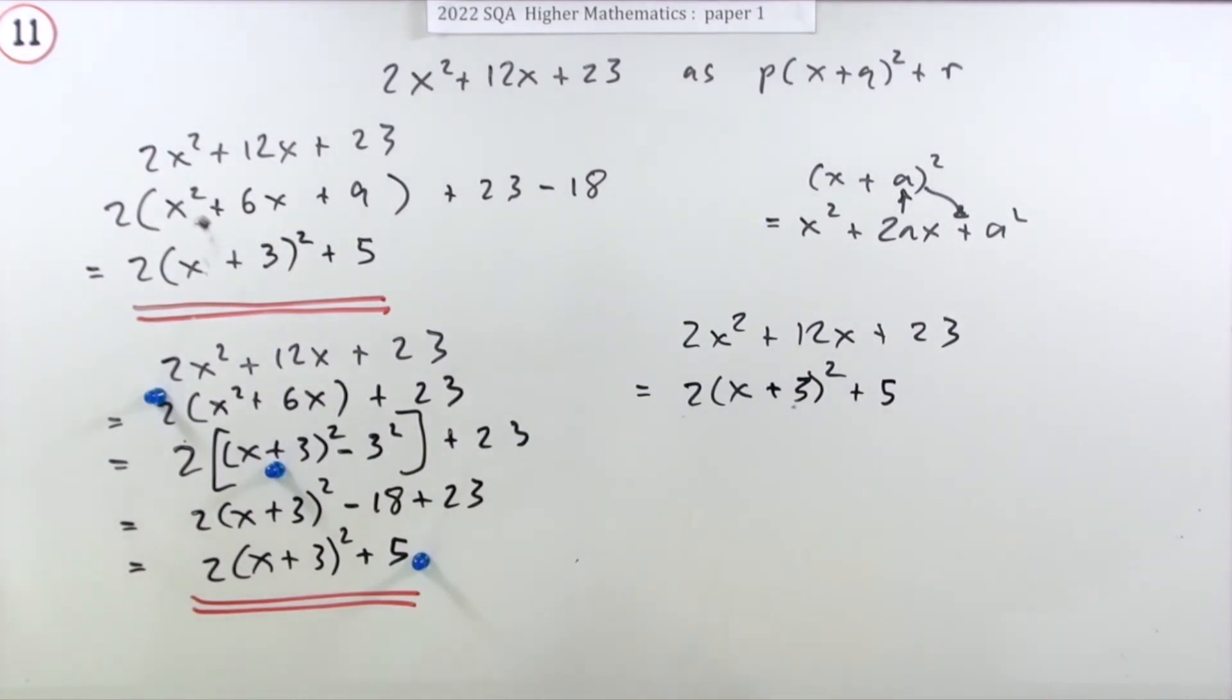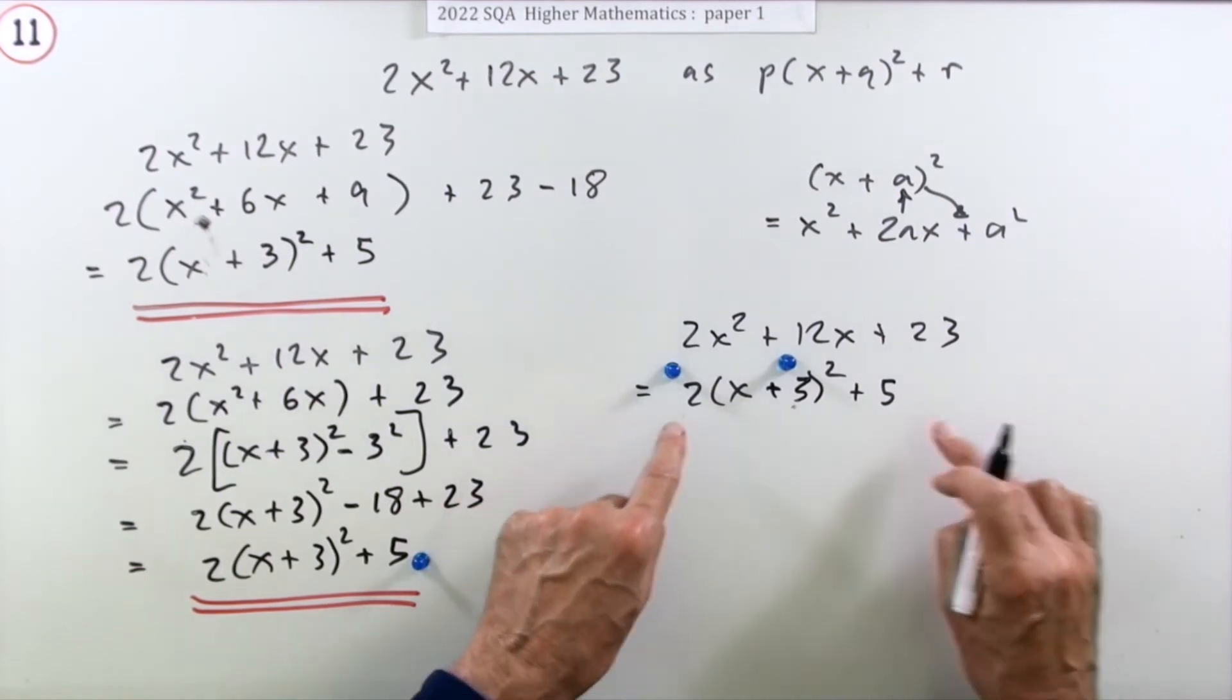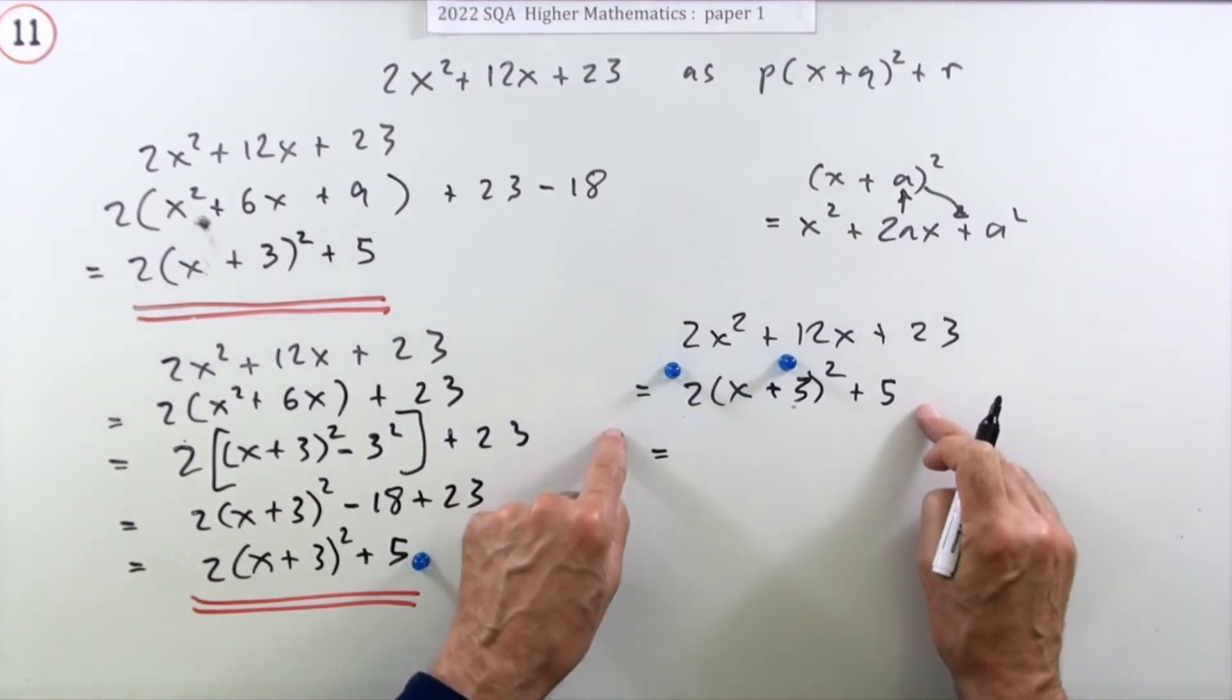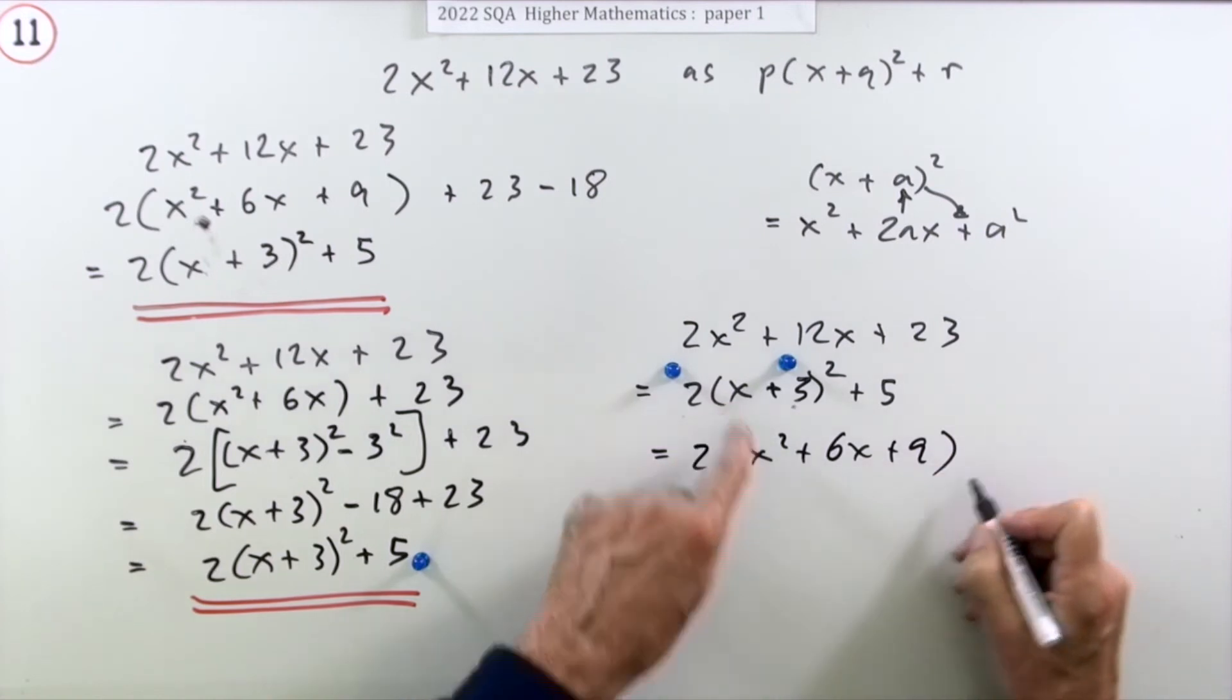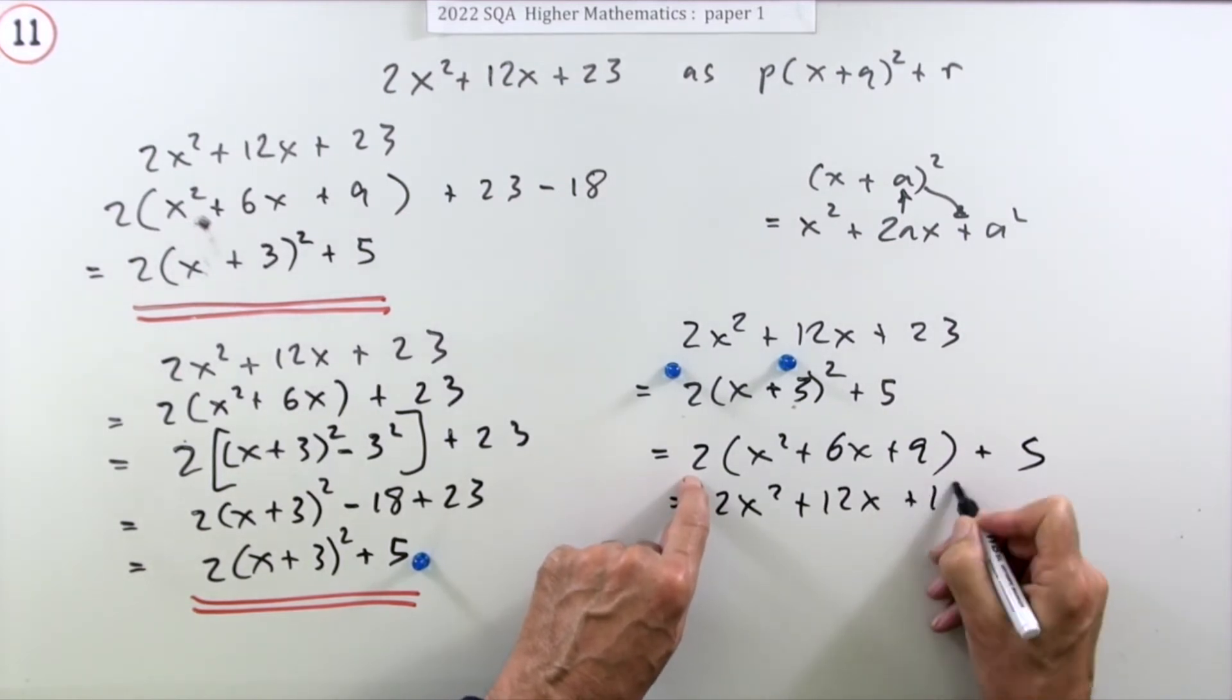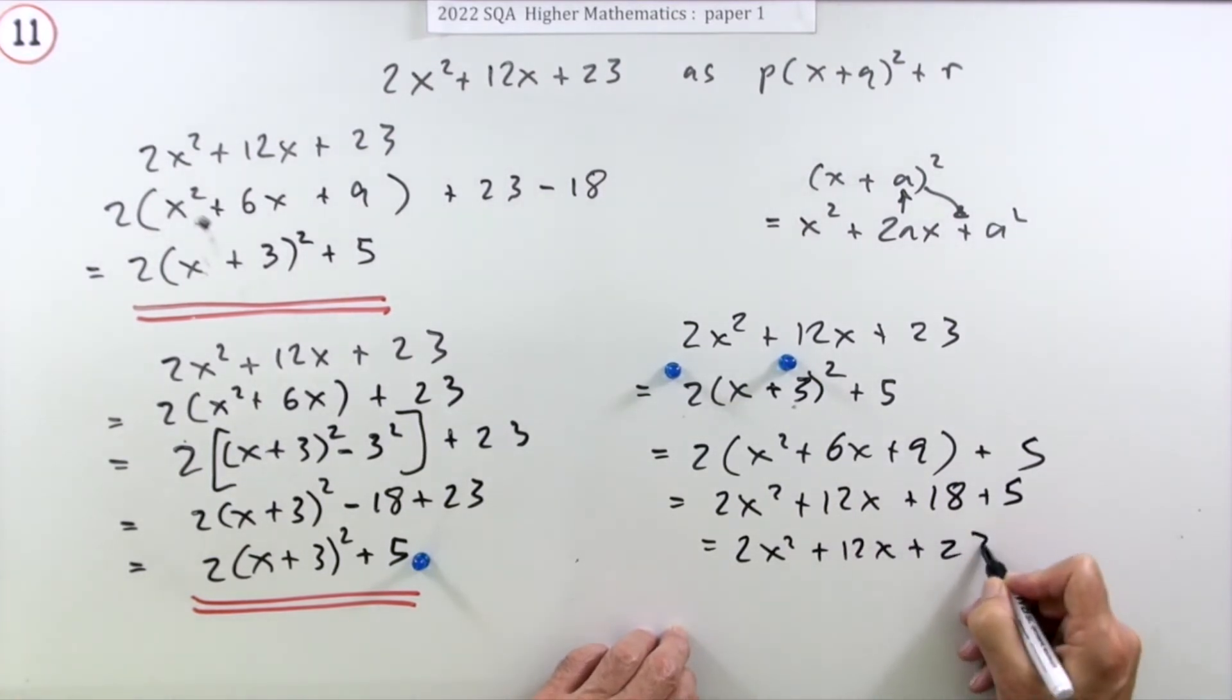So you could just do it all in your head, and if you did do that, you would get two of the marks - the mark for the two and the mark for the three. But according to the marking scheme, if you were to do this in your head, you'd have to demonstrate how you got that five by multiplying it out to show it was correct. So you'd multiply that out: x² + 6x + 9 (square the first, square the last, twice the product) plus the five. 2x² + 12x + 18 + 5. 2x² + 12x + 23. And then you get the last mark when you've shown it actually works.